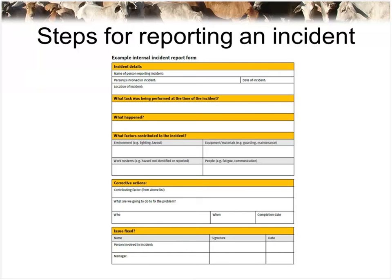Not all incidents and near misses are deemed to be notifiable. On the screen is an example of what an internal incident report form may look like — this is also available on the Workplace Health and Safety Queensland website and will be sent to all participants after today's webinar. The form includes the people involved in the incident, the task being done at the time, the contributing factors, and what corrective actions have been taken. Keep this for future records in case any similar issues happen again.